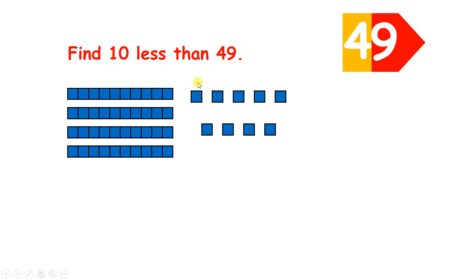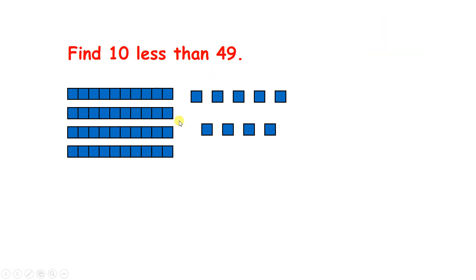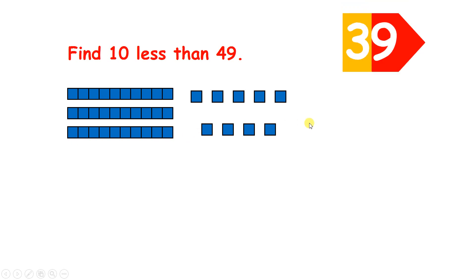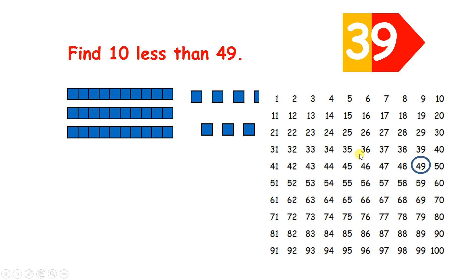Now find 10 less than 49. So if we take away 10, we still have nine units, but now we only have three 10s, so we have 39. And on a 100 square, to find 10 less, we move one place up to 39.